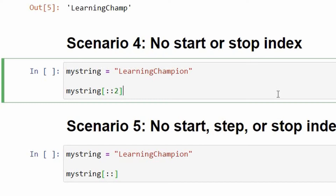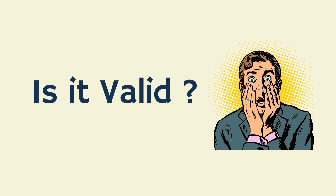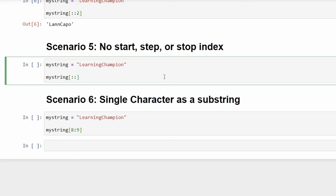Scenario 5: no start, step, or stop index. Let us now consider a peculiar scenario where we neither mention the start index, stop index, nor the step size in the syntax while grabbing the substring. At first glance you might think this is not a valid syntax, but to your surprise it is completely valid. In such a scenario, Python will assume the starting index as 0, the stop index as the end of the string, and the step size as 1. Hence, when we execute this command it will return the whole string back as the output.